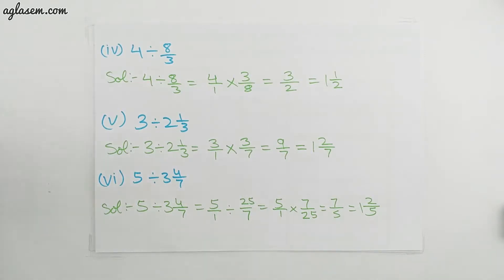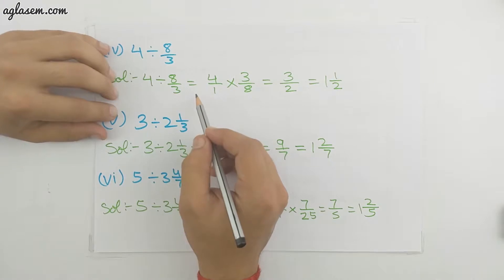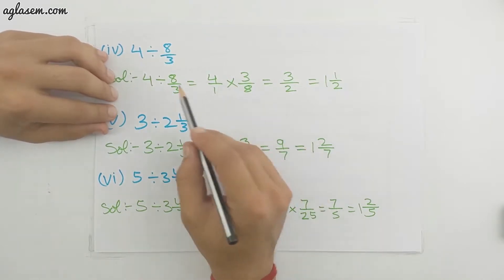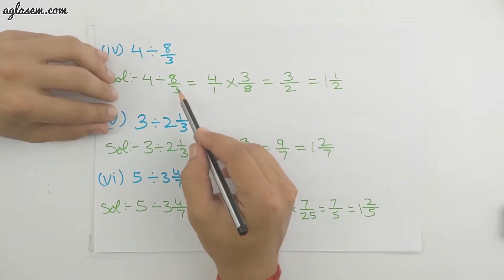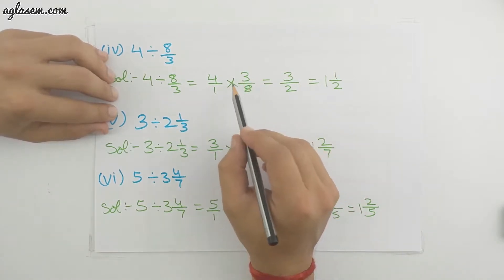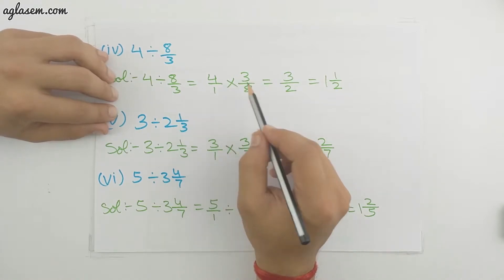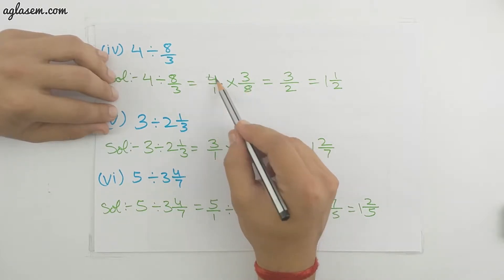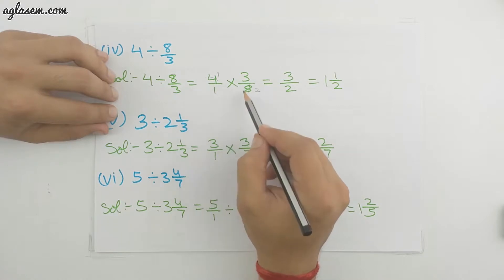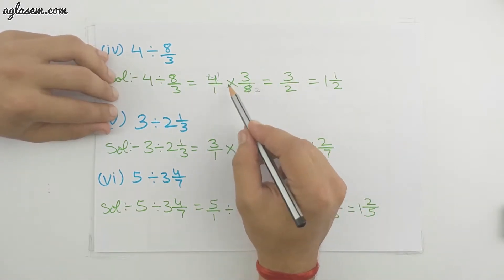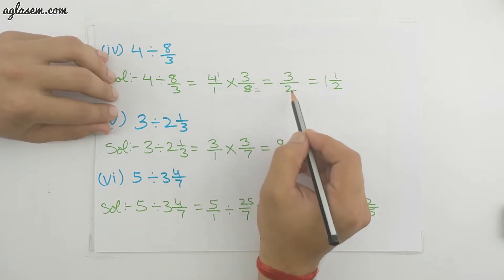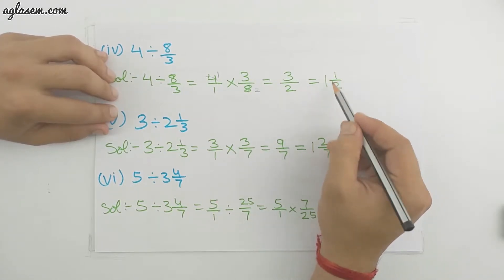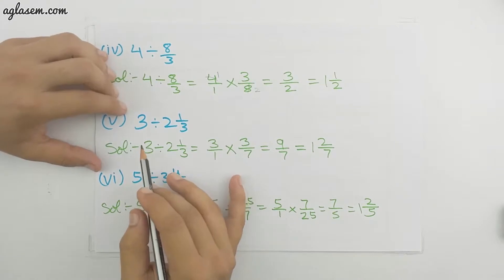The fourth part is 4 divided by 8/3. Same method as before — 4/1 multiplied by, and 8/3 turns into 3/8. We can do cross-cancellation: 4 and 8 share a common factor of 4, so it reduces to 1 and 2. Multiplying gives 3/2, which is an improper fraction. We change it to the mixed fraction 1 whole 1/2.